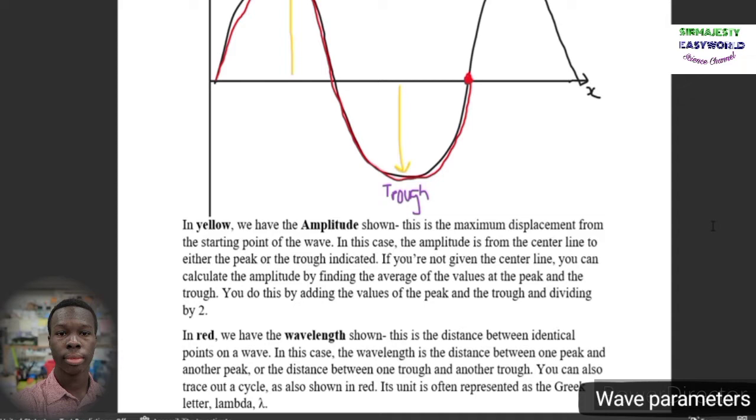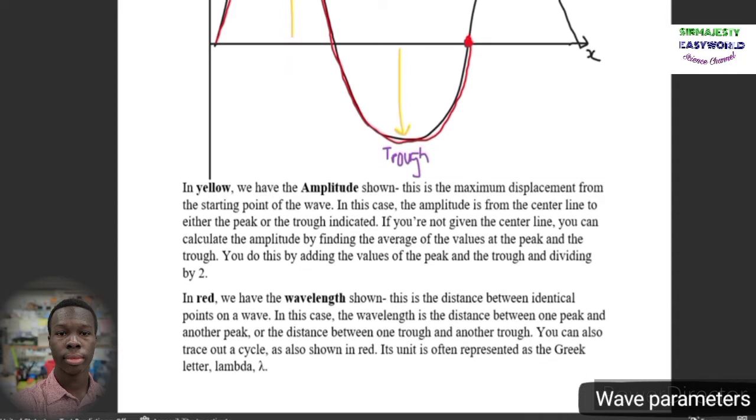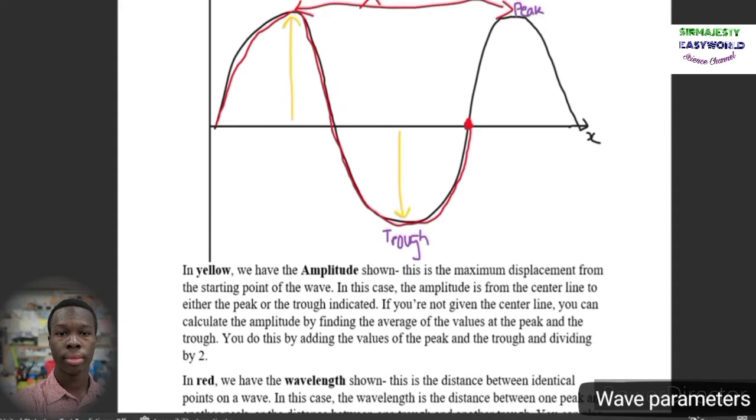This shows us one wavelength. The unit of wavelength is often represented as a Greek letter lambda, which is shown right here, lambda. Moving on.